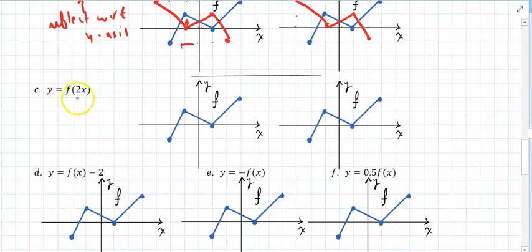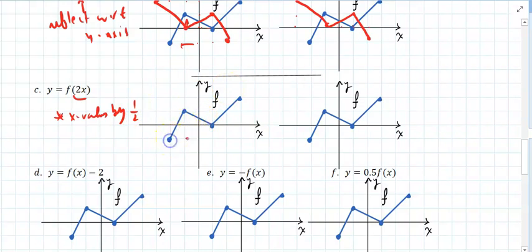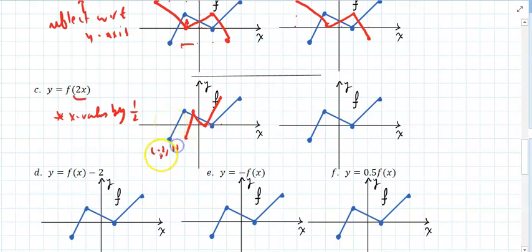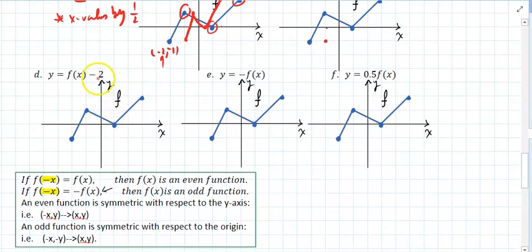This is going to multiply X values by a half — remember, whatever is affecting X, you do the opposite, so it's going to shrink these points by a factor of 2. This point by a factor of 2, and this one by a factor of 2 — one point five. Done deal. Or you could pick the points and literally multiply each X value by a half. This is going to shift this graph 2 units down. It's very easy once you get the hang of this.